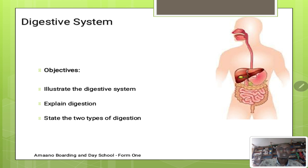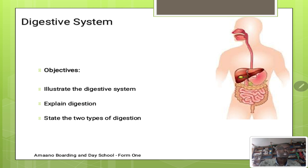By the end of this lesson we need to answer three questions. Number one: we need to illustrate the digestive system — meaning naming or stating the main organs of the digestive system. Number two: we need to explain digestion — what is meant by digestion and what is the necessity of digestion. Number three: state the two main types of digestion. So let's start the class.